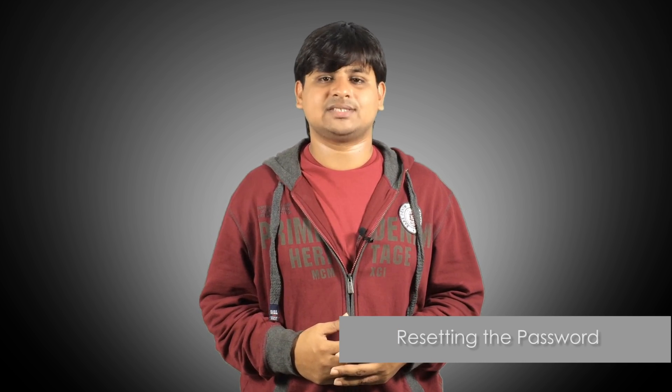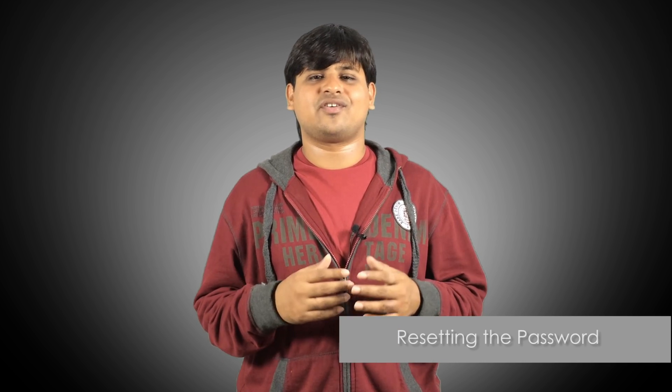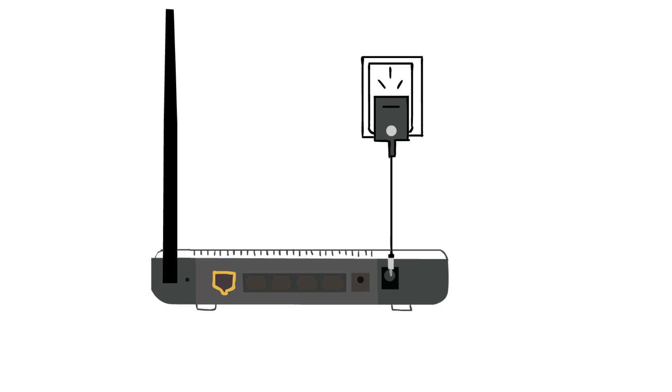Third step: how to reset the NetCare wireless router. Turn your router to the back and next to your antenna, there will be a small pin switch. Take a pen or pencil and press this switch for about 10 seconds. Now wait a few minutes and try logging in with the previous IP addresses and credentials.